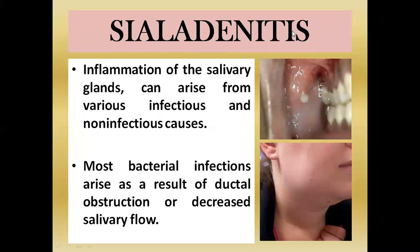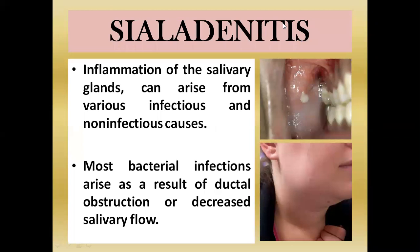The most common infectious agents are bacterial infections, often occurring in systemically compromised or low-immune patients. Infections may arise in the floor of the mouth or within the salivary gland systems. Non-infectious causes include blockage of the duct system due to stones, trauma, or other causes leading to decreased secretion.